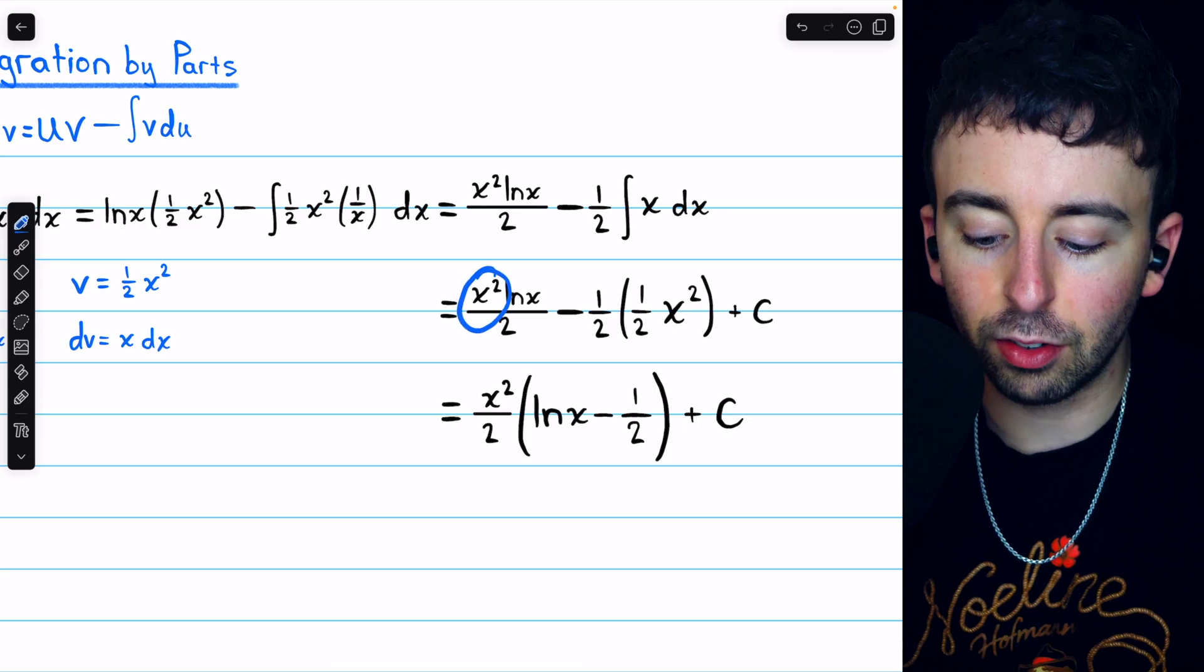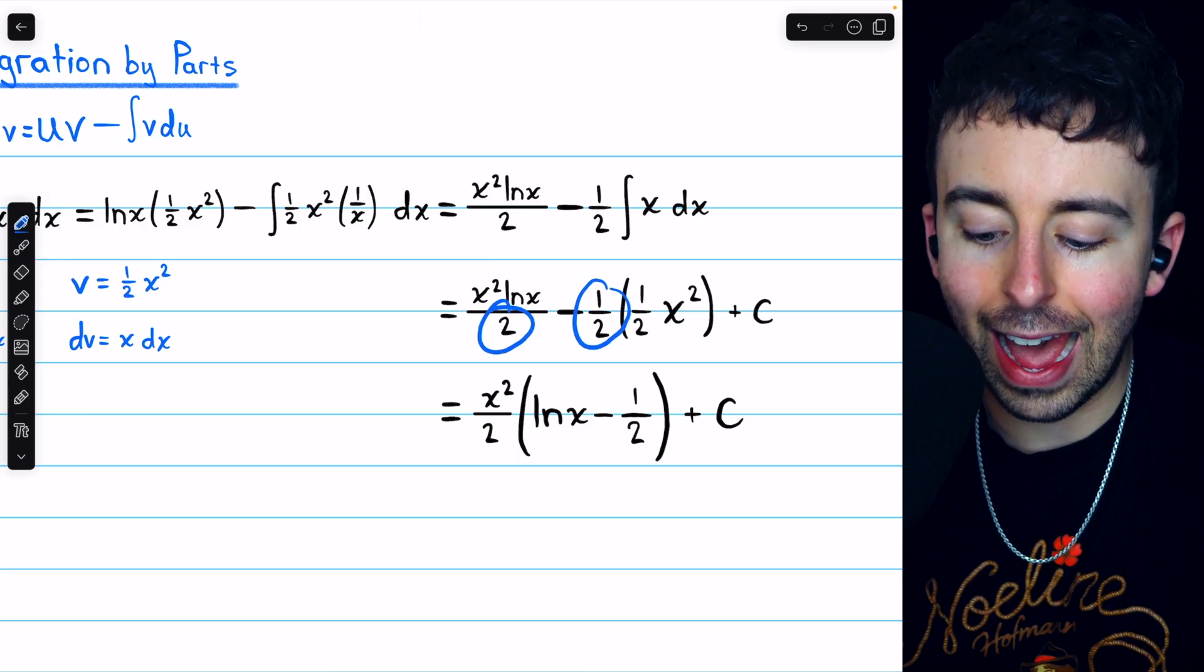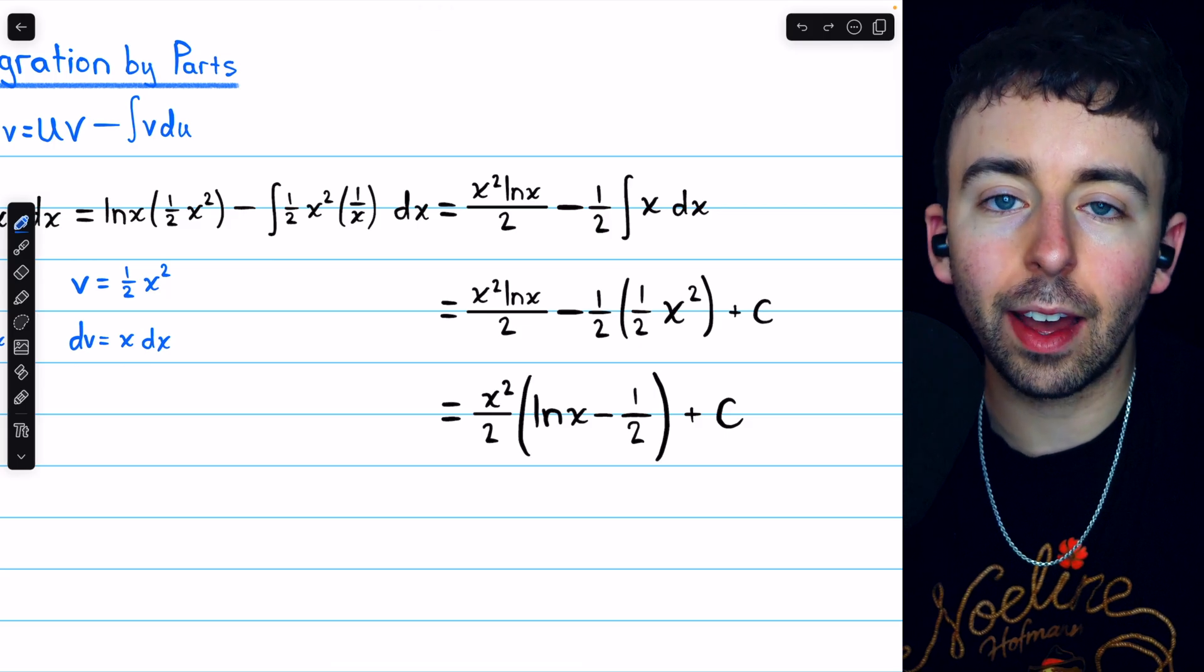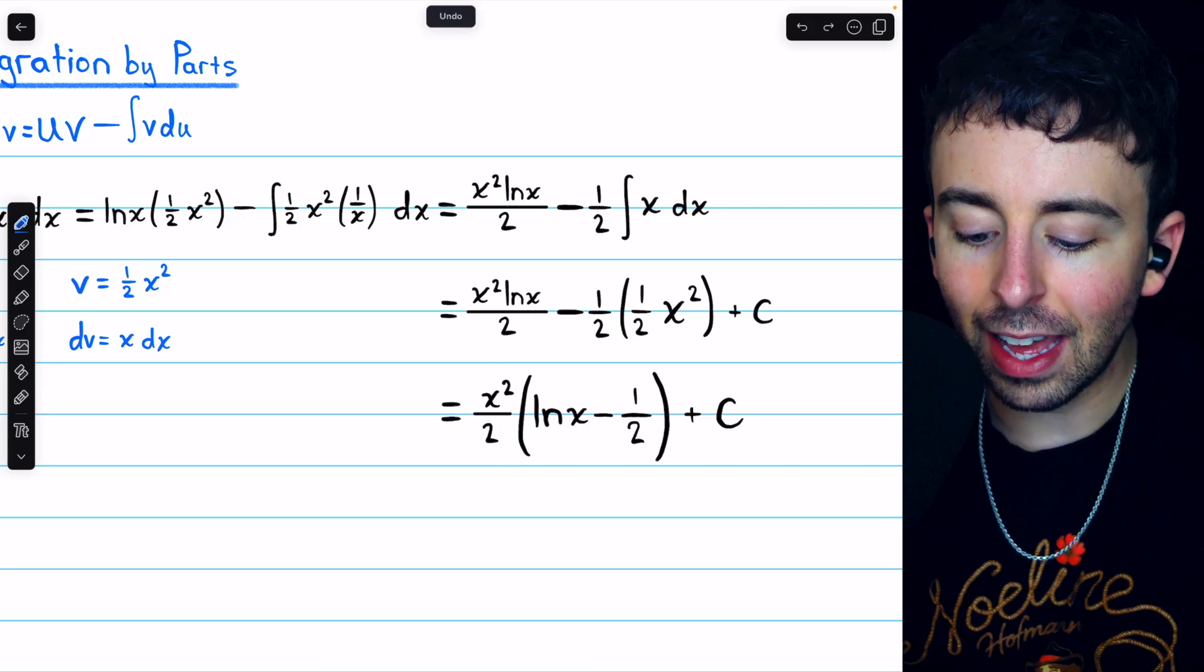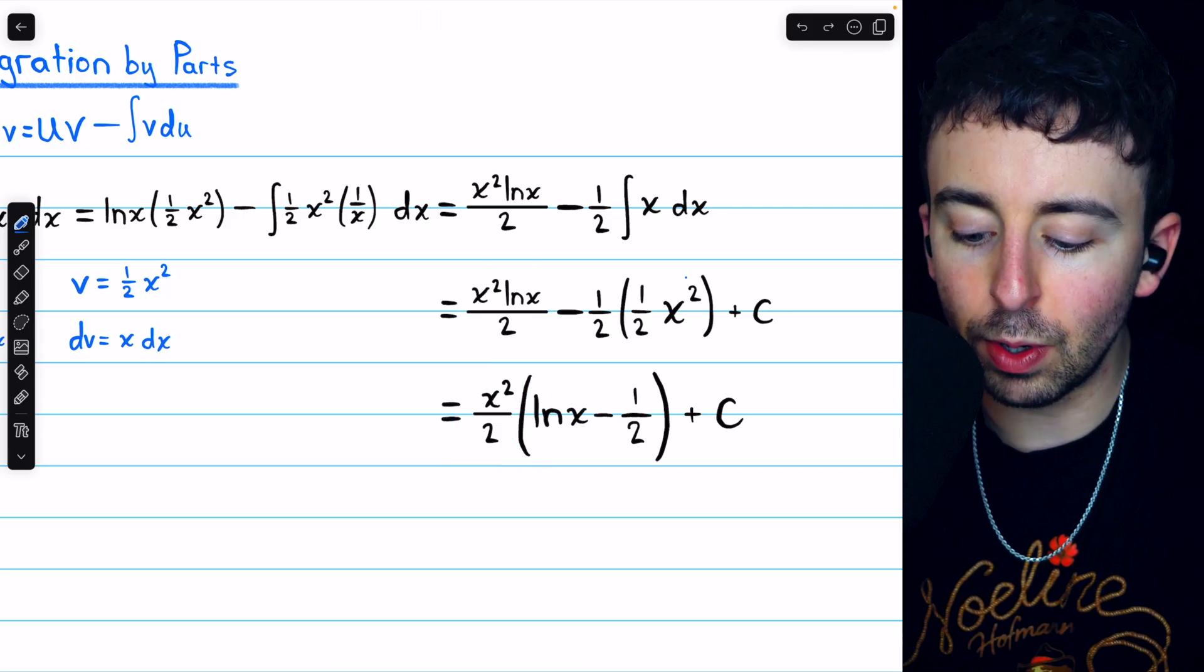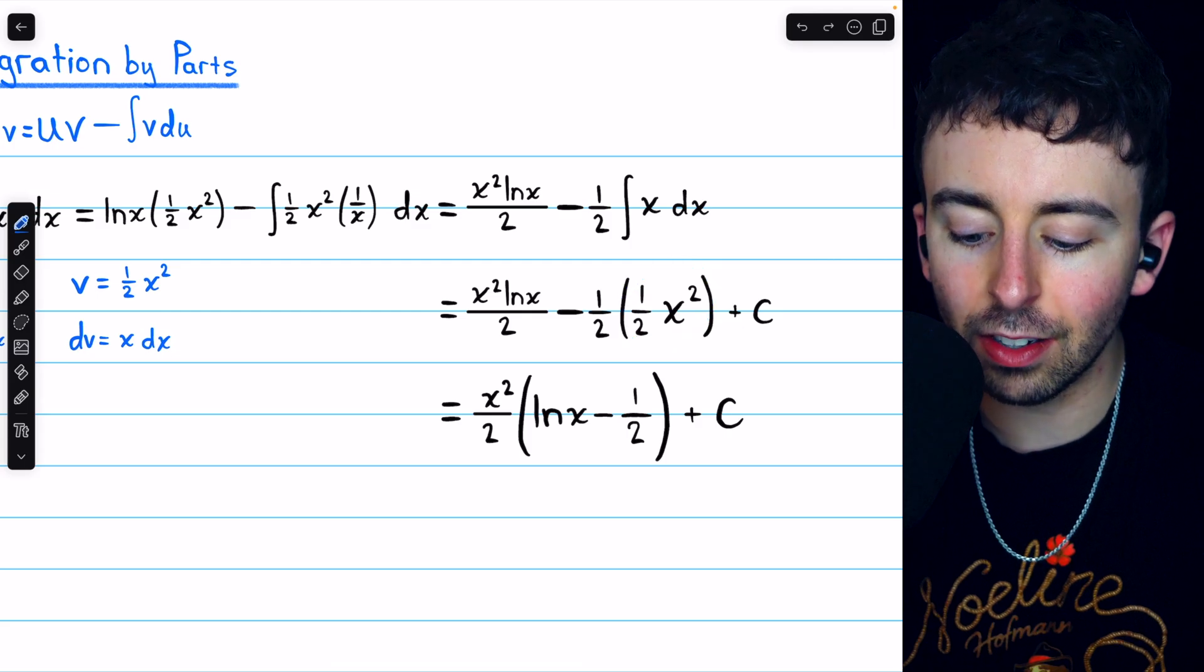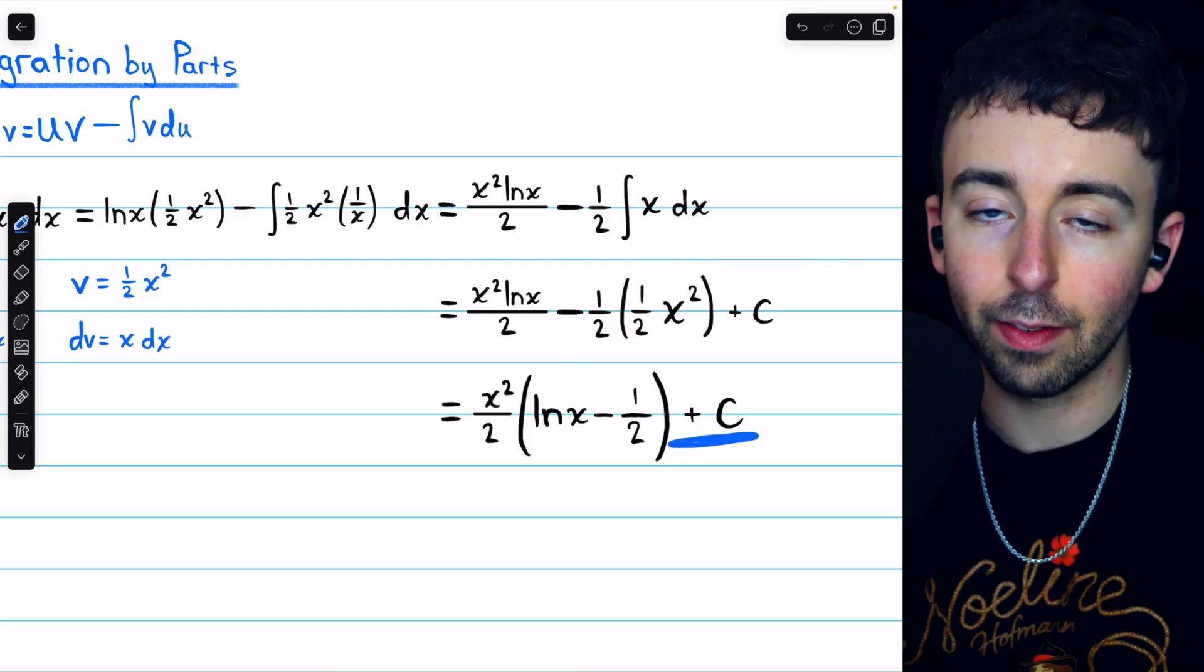Then, since this has an x squared, and this has an x squared, and they both have a half, we can factor 1 half x squared out of these terms. So, there's 1 half x squared taken out. That just leaves ln(x) in that first term. And if we take a half x squared out of that second term, that just leaves minus half. And, of course, we still have plus c.